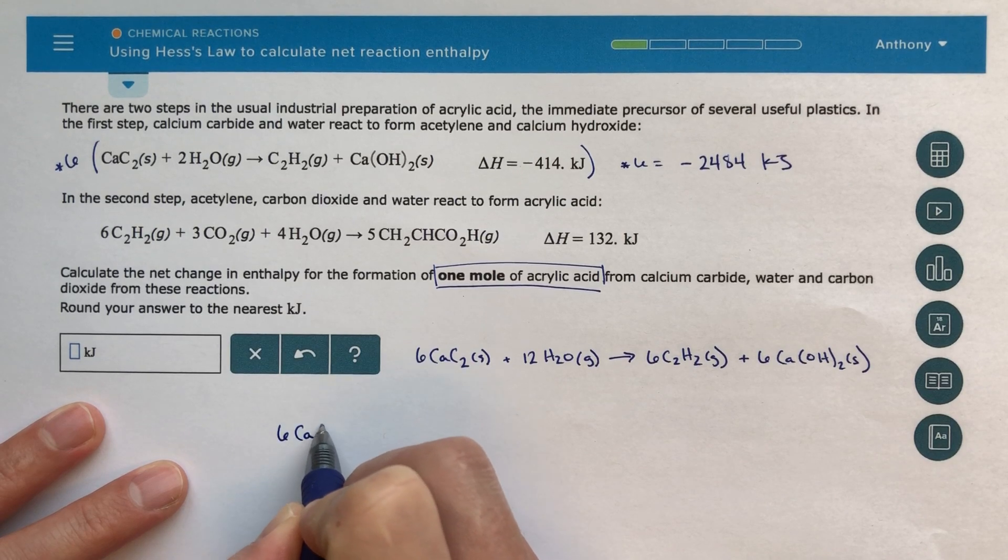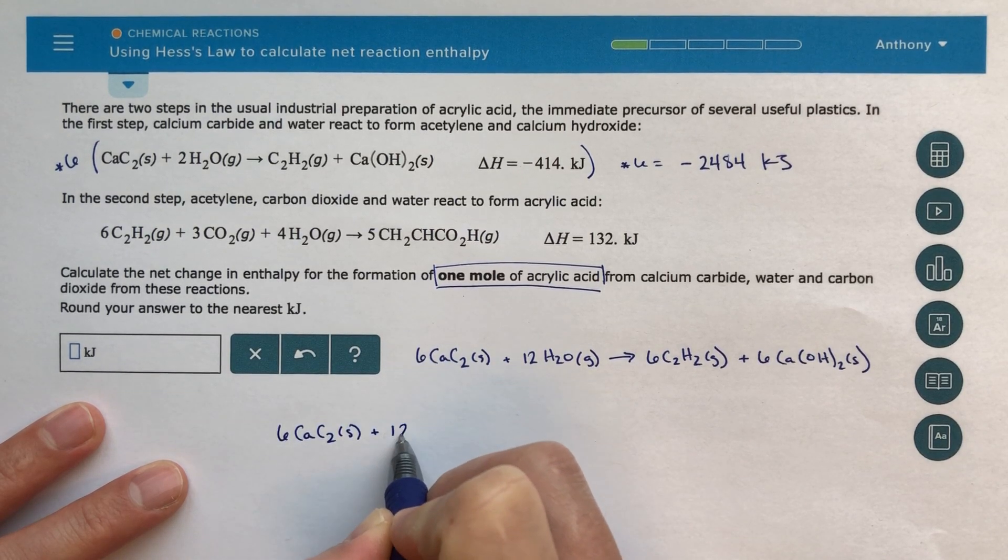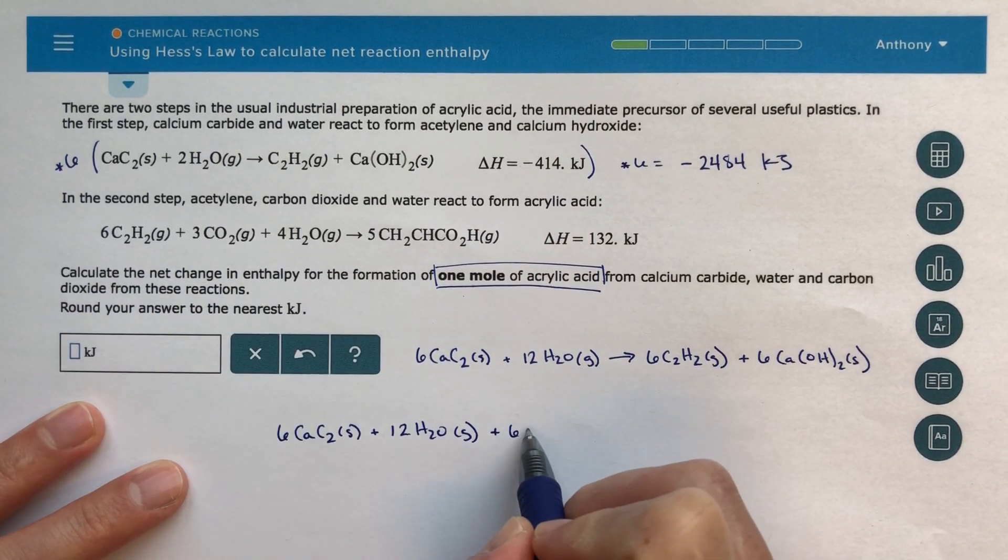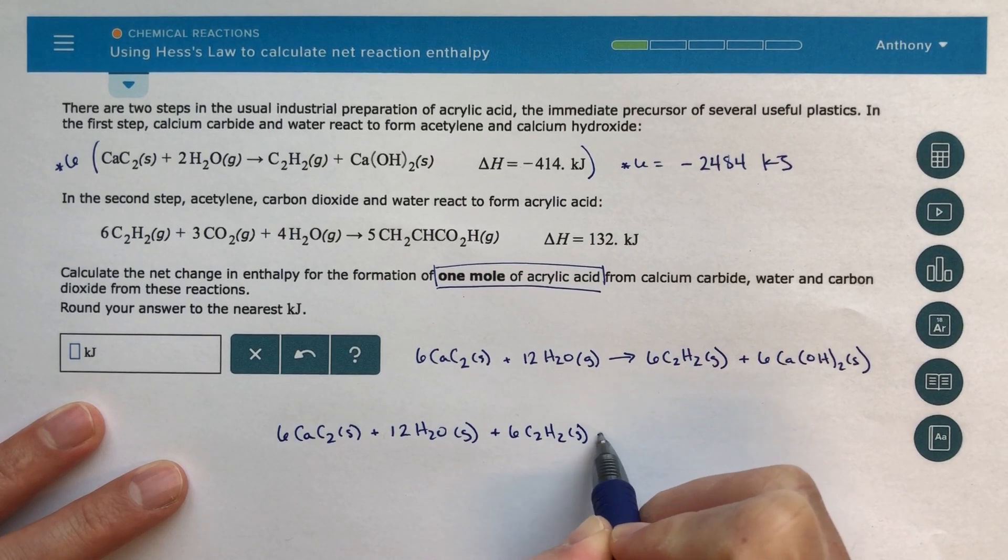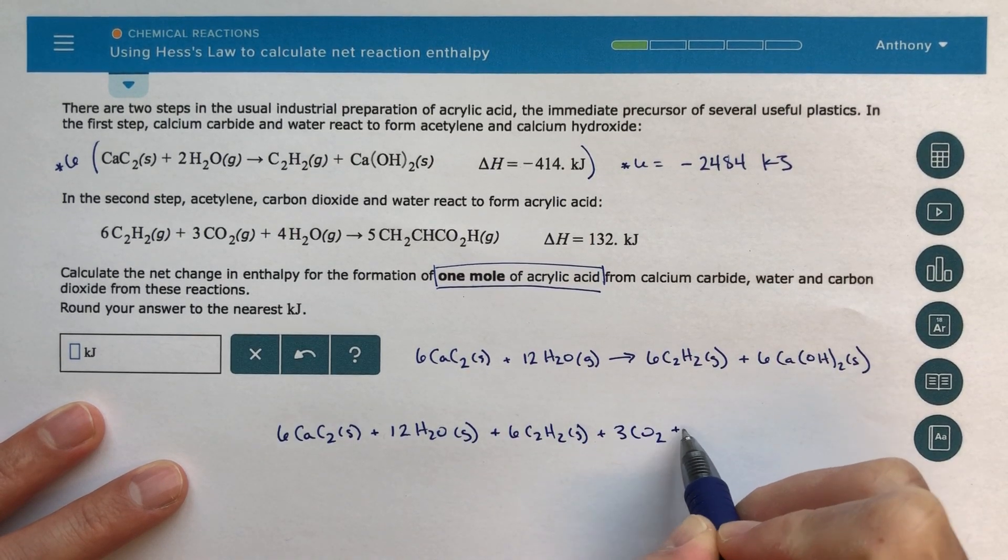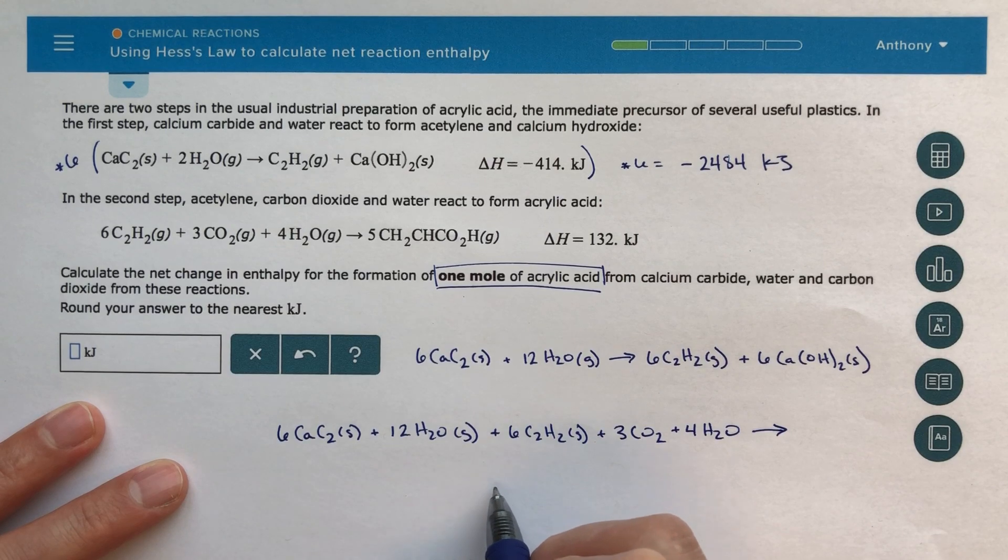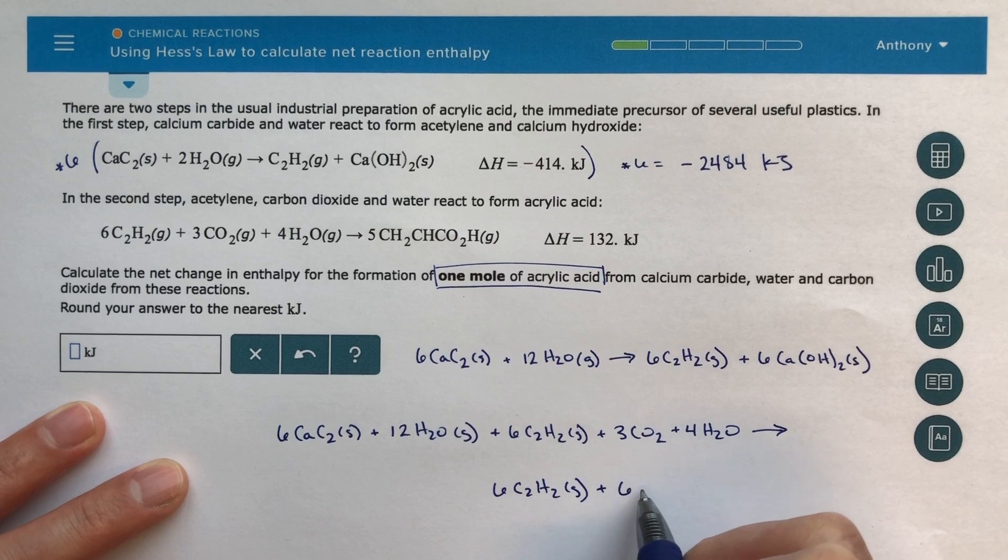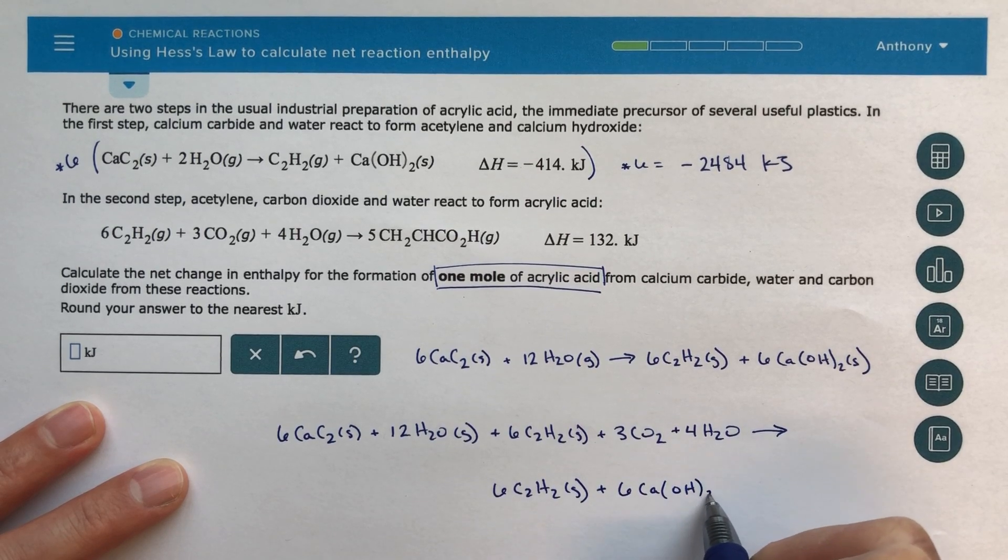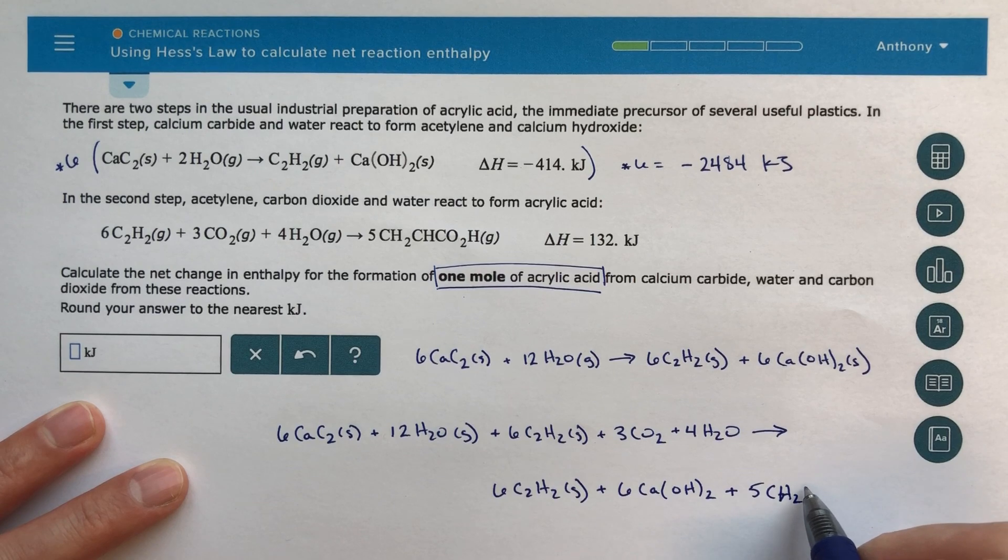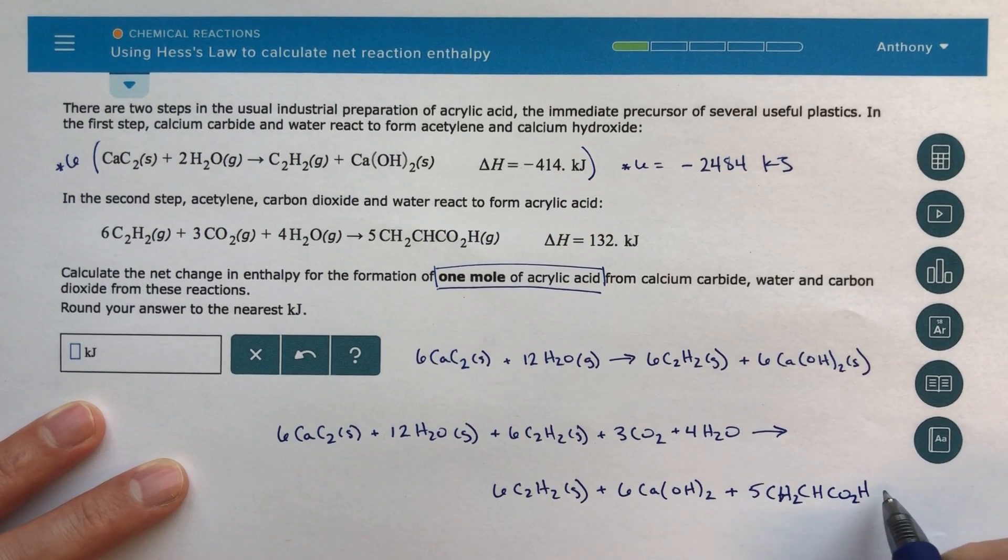So six calcium carbide plus 12 H2O gas plus six C2H2 gas plus three CO2 plus four more water molecules. I'm going to draw this the next line right below it. Goes to six C2H2 gas plus six calcium OH2 plus five CH2CHCO2H, that's a big one.